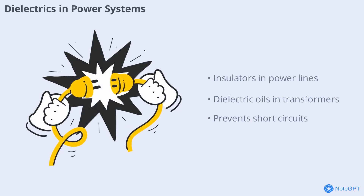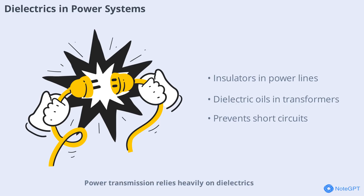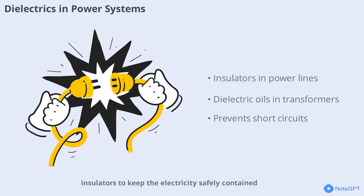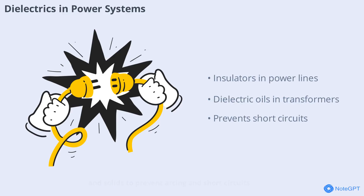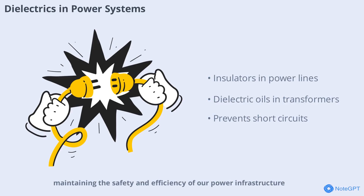Power transmission relies heavily on dielectrics. High-voltage power lines use ceramic or glass insulators to keep the electricity safely contained. Transformers and circuit breakers also use dielectric oils and solids to prevent arcing and short circuits. These applications highlight the importance of dielectrics in maintaining the safety and efficiency of our power infrastructure.